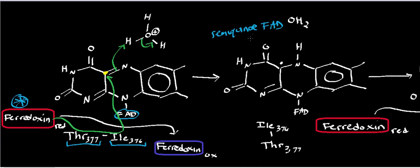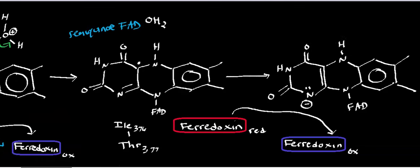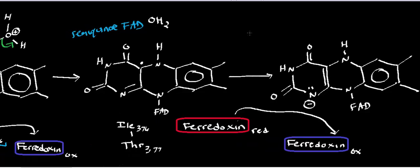We've now transferred one electron onto the FAD. We're actually going to transfer a second electron — as I mentioned in the previous video, we need two reduced ferredoxins. So a second reduced ferredoxin comes in, and once again it transfers the electron, snaking it along threonine-377 and isoleucine-376. The electron then couples with the radical electron, forming a double bond in part of the FAD.